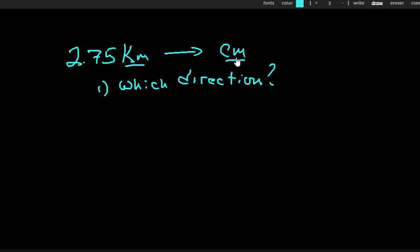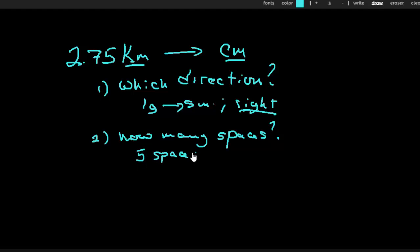Large to small means that I'm going to move my decimal point to the right. So I'm going to the right. That's the first question. Second question is how many spaces? So for this I might need the number line. And I can use this number line just to sort of figure out how many spaces to move the decimal point. So if I'm going to go from kilometers down to centimeters, I've got three spaces between kilometers and the base unit. And another two spaces between the base unit and centimeters. So that's five spaces that I'm going to be moving the decimal point.